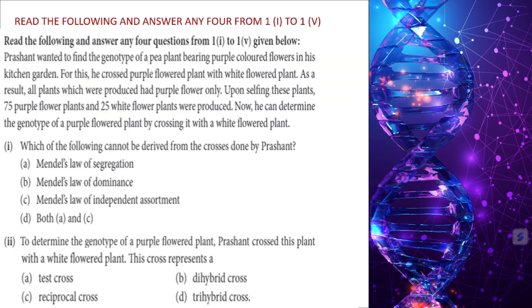The first question: Prashant wanted to find the genotype of a pea plant bearing purple-colored flowers in his kitchen garden. He crossed the purple flower plant with a white flower plant. As a result, all plants produced had purple flowers only. Upon selfing these plants, 75 purple flower and 25 white flower plants were produced — a 3:1 ratio. He can determine the genotype by crossing it with a white flower plant.